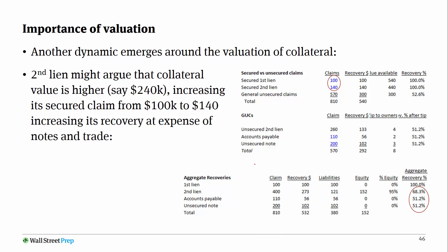Another dynamic that emerges is around the valuation of collateral. The second lien might argue that if the overall valuation is higher, maybe the collateral value is higher as well. These are real valuation fights that happen in court, and they can spill out into an out-of-court restructuring. They could say there's no black-and-white rule about what the value of collateral is.